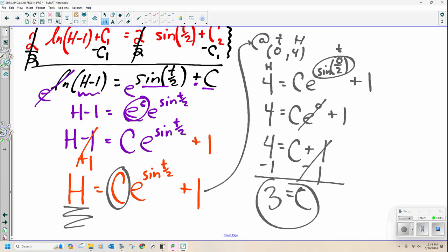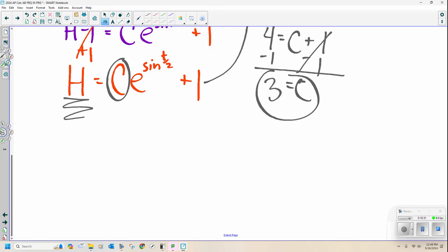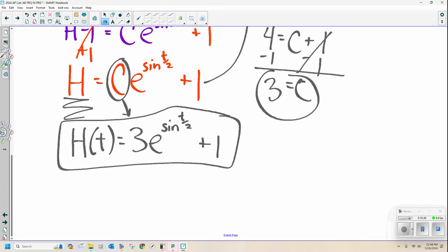And I'll have my equation. Okay? So H of t is going to be 3, E, to the sine of t over 2 plus 1. We are done. That was not bad.